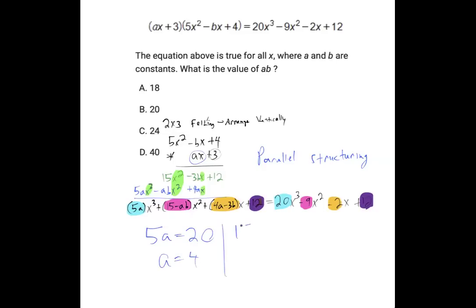15 minus ab equals negative 9, but we know that a is 4. Take away 15 from both sides, divide by negative 4, and we have an answer for a and an answer for b. And so what's a times b? That's going to be 4 times 6, and that's 24, and that's your answer.